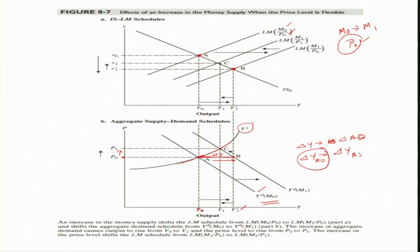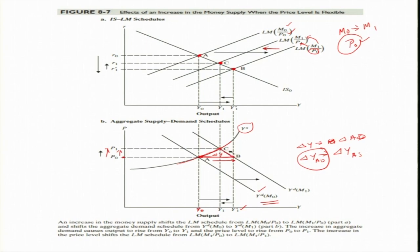There is an increase in aggregate demand delta Y, but firms will produce the matching amount only at a higher price. When the price increases from P naught to P1, the real money supply decreases further, meaning the LM curve shifts leftward. The new money supply is M1 but the price level has increased, shifting the curve from right to left. When price is increasing, there is a movement along the demand curve, and the new equilibrium position is found.